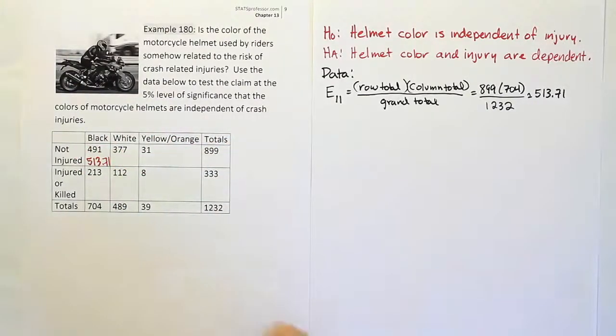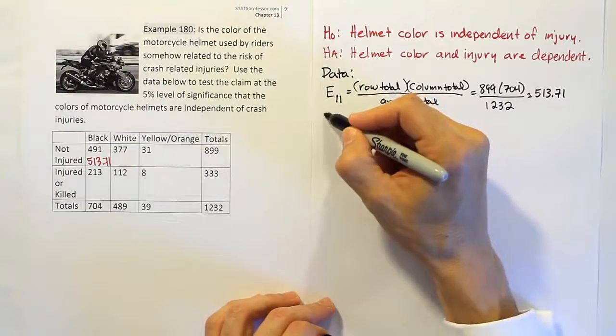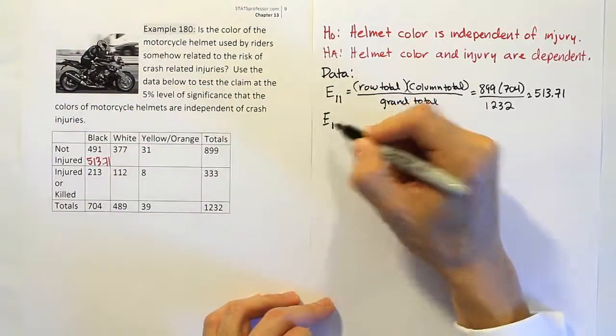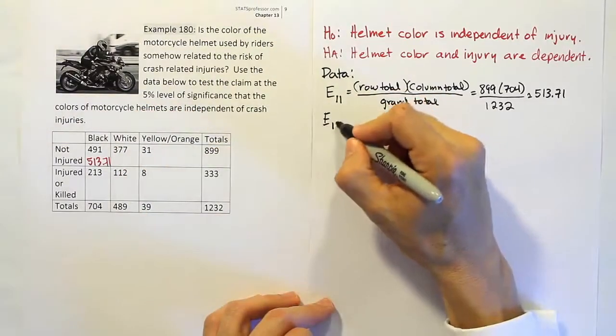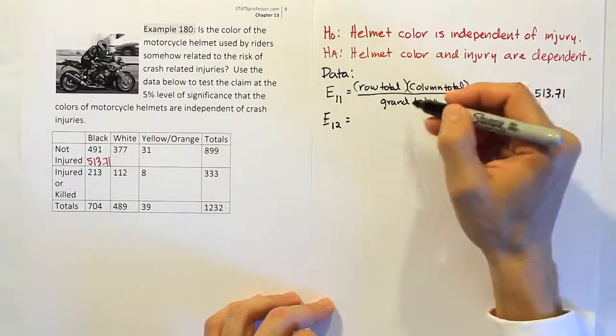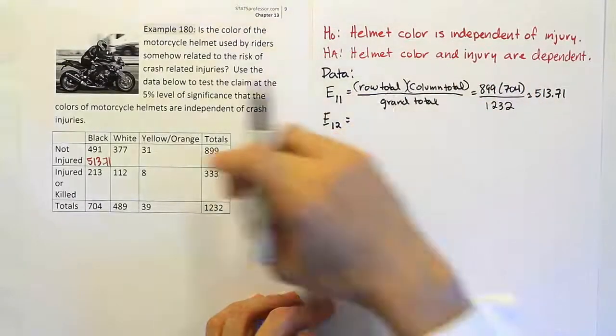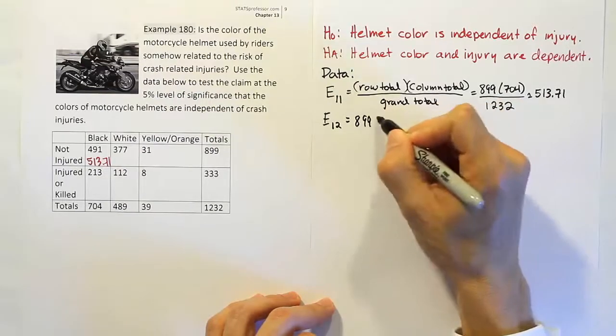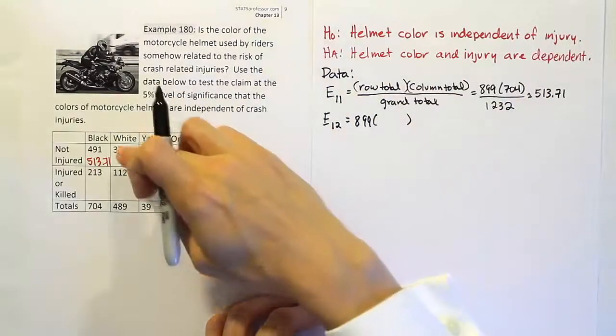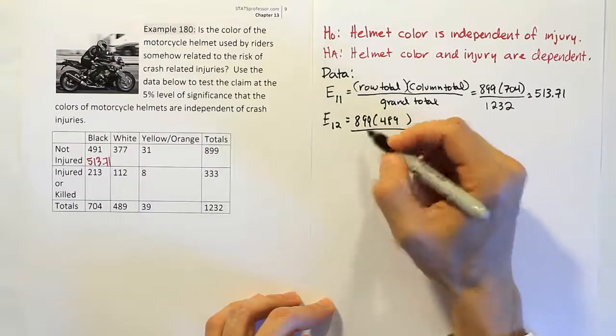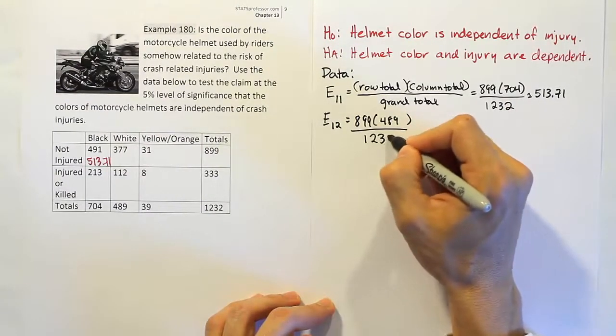Let's do the next cell right next to it. It's in the first row, so we'll put 1 for the row, but it's in the second column, so we'll put 2 for the column. Then we'll follow the formula. The first row's total is 899 times the column total for the second column, which is 489, divided by the grand total of 1232.